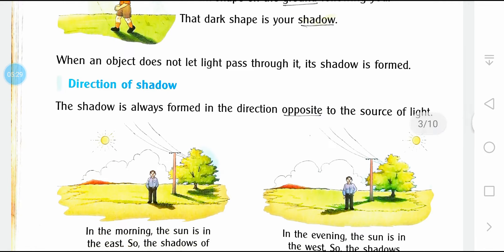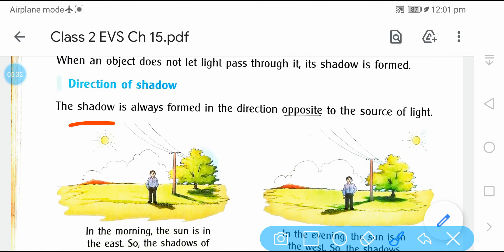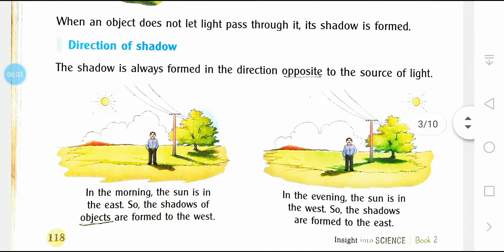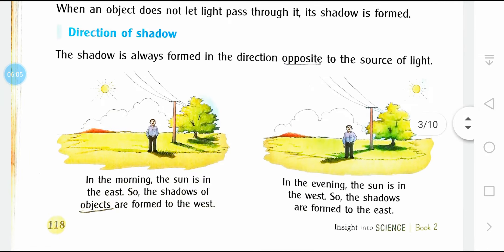Direction of shadow: The shadow is always formed in the direction opposite to the source of light. Light का जो source है, उसके opposite में हमेशा shadow बनता है. अगर आप torch के सामने हाथ रखो, तो torch के opposite side पे shadow बनेगा — क्योंकि वो light को pass नहीं होने दे रहा. परछाई हमेशा opposite direction में बनती है जहाँ से light आ रही है.